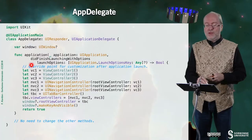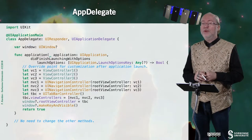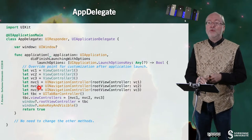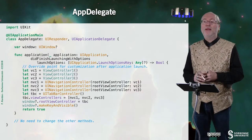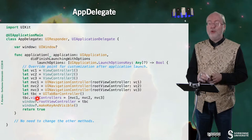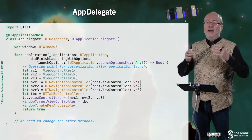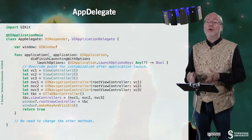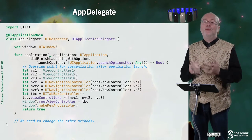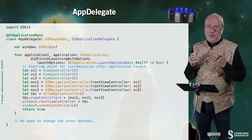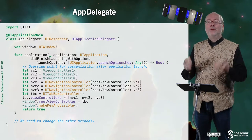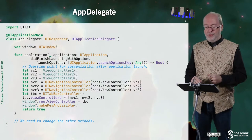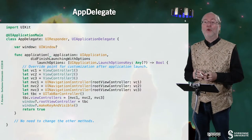Let's have a look at the AppDelegate first. It's very classical. First I'm creating the three view controllers. Then I'm embedding these three view controllers in three UINavigationControllers by selecting the appropriate root view controller. Then I create a UITabBarController and I associate to the viewControllers attribute of the UITabBarController the three navigation controllers I have created. Then I set the UITabBarController as the root controller of the window.